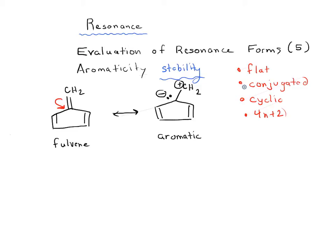It's flat, conjugated all the way around, cyclic, and it actually has 6 pi electrons if you count the lone pair. So this is aromatic, this is actually not aromatic. Now it is charged as opposed to fulvene being neutral, but this is going to be more significant than we expect.